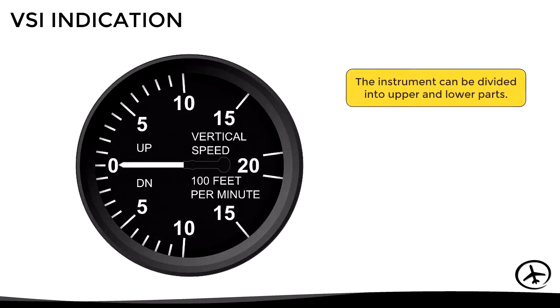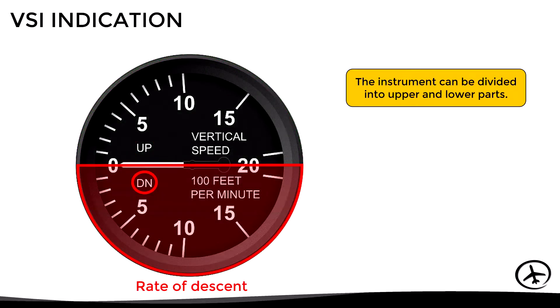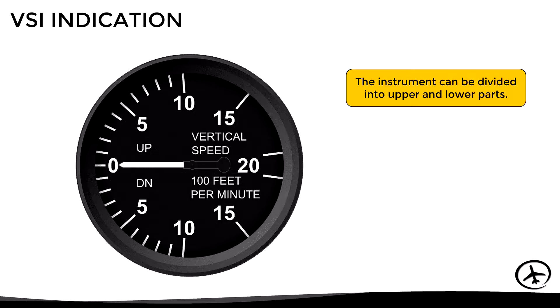The VSI can be divided into upper and lower parts. If the needle is in the upper part it represents a rate of climb, while if it is in the lower part it represents a rate of descent. In this particular case, each of the instrument's markings represents 100 feet.